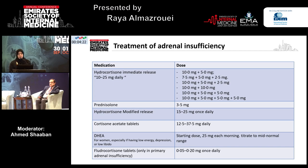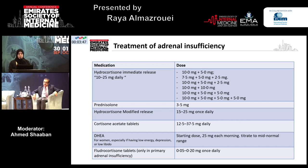Treatment of adrenal insufficiency depends on the type. For primary adrenal insufficiency, we need to replace both glucocorticoid and mineralocorticoid. Glucocorticoid replacement can be with hydrocortisone immediate release, hydrocortisone modified release, or cortisone acetate tablets — which are not available here. Glucocorticoid doses are usually in the range of 0.05 to 2 mg once daily. Adrenal androgen replacement in women is indicated only if they have low energy, depression, or low libido, with attention to side effects such as hirsutism and acne.